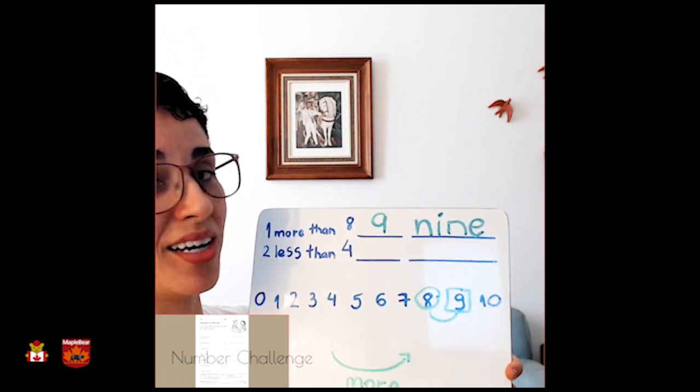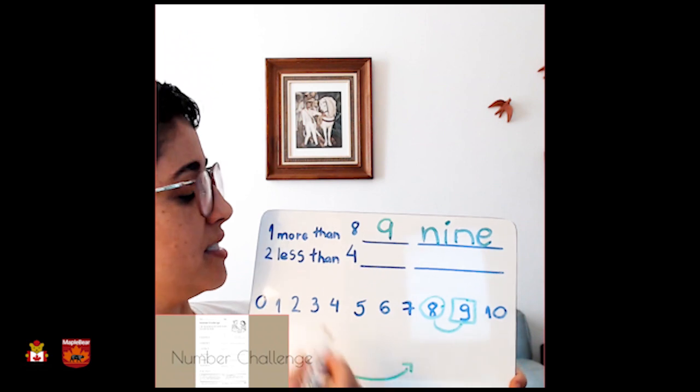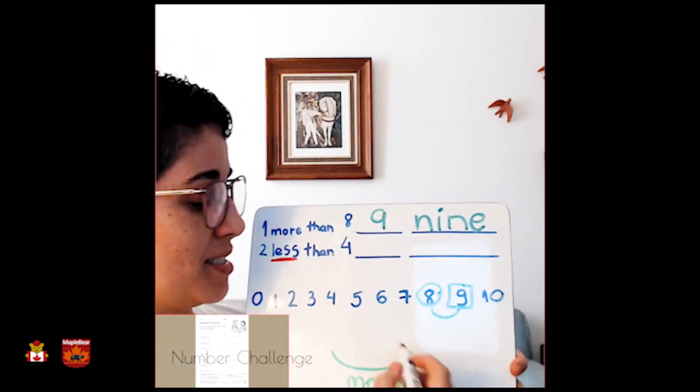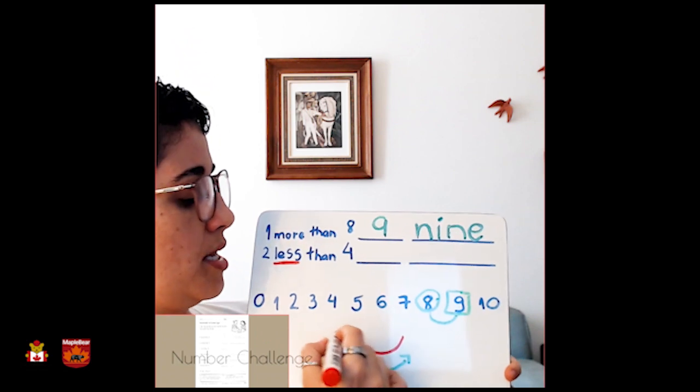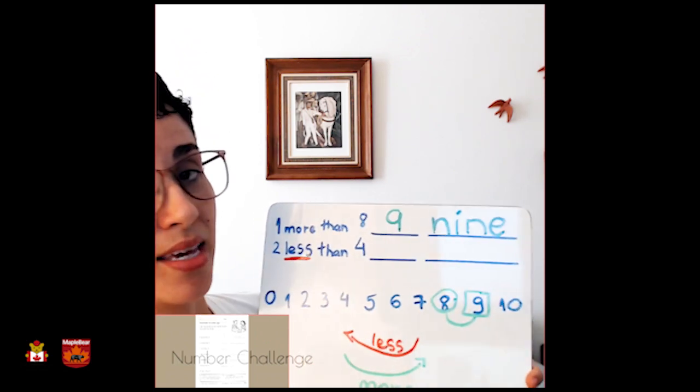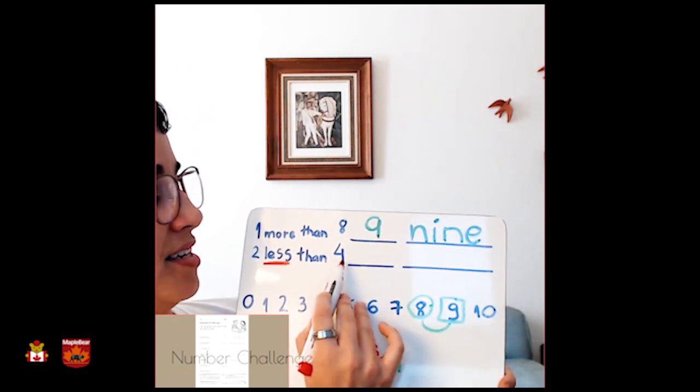On the next one, it's a little bit different because it's less. Do you see the word here? Less. It means that we go through this direction. Less. Let's see what we have. Two less than four.